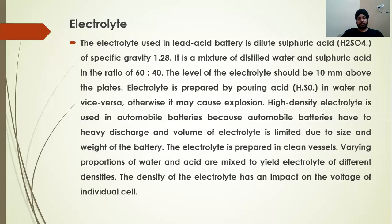The electrolyte is prepared by pouring sulfuric acid (H2SO4) into water — not the other way around — otherwise it may cause an explosion. High-density electrolyte is used in automobile batteries because automobile batteries need high discharge current and the volume of electrolyte is limited due to the size and weight of the battery. The electrolyte is prepared in a clean vessel with varying proportions of water and acid to yield different densities.